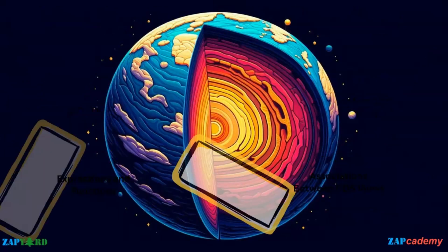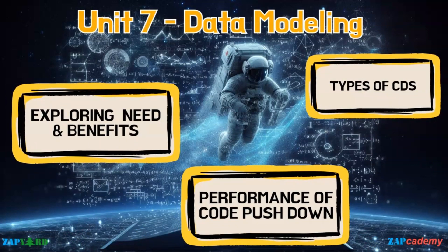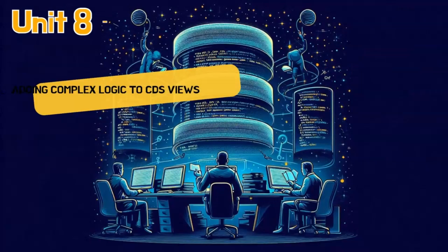Data modeling is a critical aspect of ABAP development on cloud, ensuring that data is structured and organized effectively. By using Core Data Services, we will create robust and flexible data models that align with our business requirements. In this unit, we will explore the importance of data modeling and discuss the various types of CDS views, including entity views, projection views, and search views. Each type has its own purpose and can be used to represent different aspects of our data. Additionally, we will explore techniques to improve the performance of code pushdown within CDS views, ensuring our applications run effectively and efficiently.